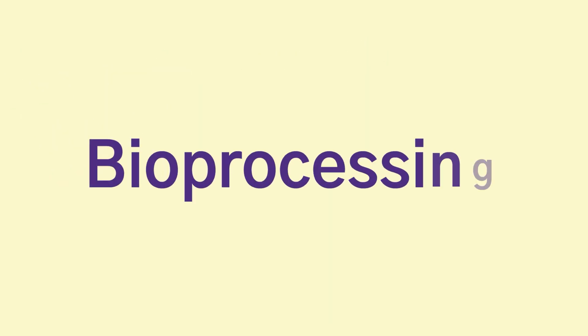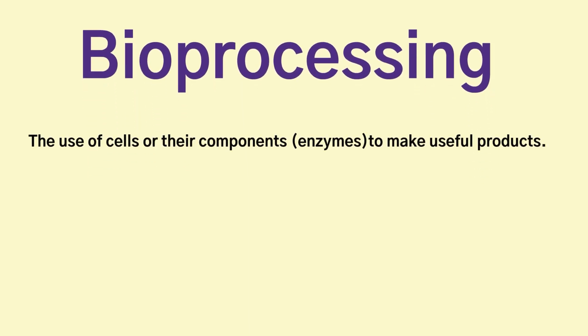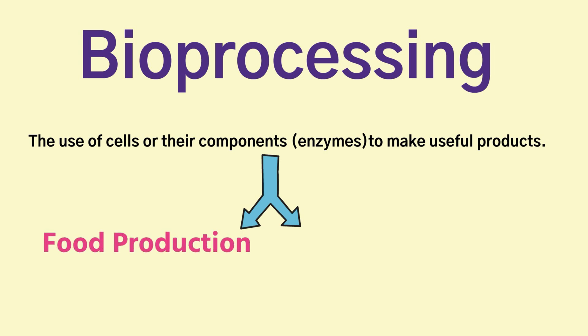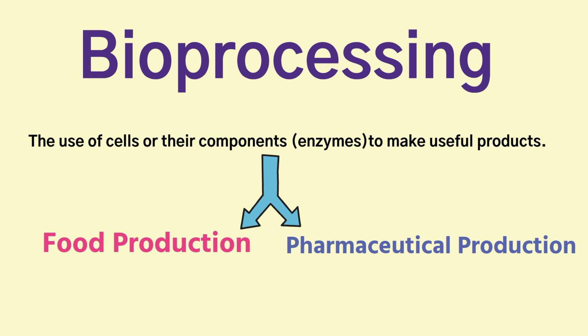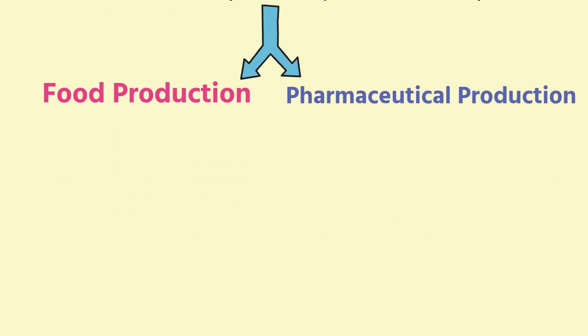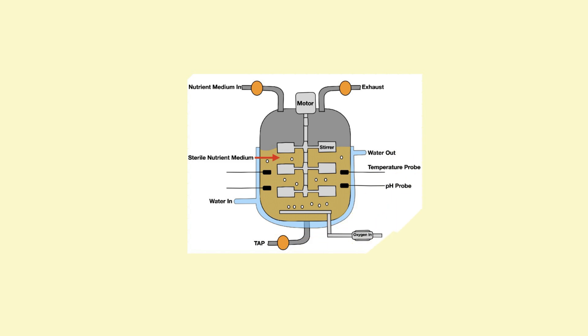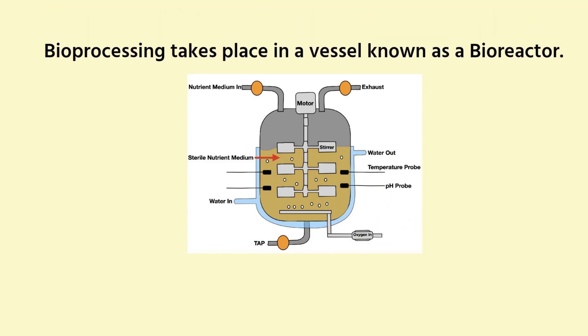When you study enzymes you encounter bioprocessing, which is the use of cells or their components — so enzymes — to make useful products. It's a huge growth industry in Ireland; it's used to produce food products and also pharmaceutical products. Bioprocessing takes place in a vessel known as a bioreactor, which is a vessel in which bioprocessing takes place.